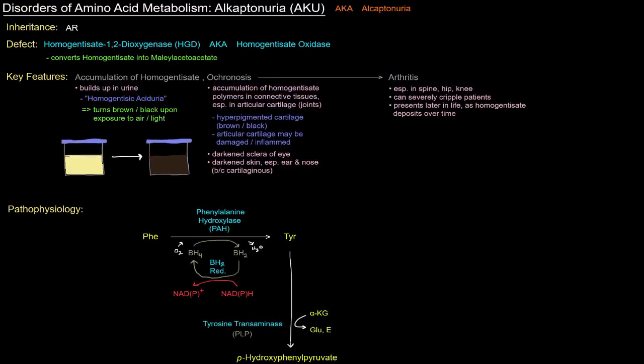So let's scroll back up here. The key thing, the most obvious and easy thing to note, is the accumulation of that homogentisate, and that builds up in the urine and leads to homogentisic aciduria. One really important thing about it is that it turns brown or even black upon exposure to air and light. So that's pretty important, noting the presence of it in the urine, especially upon realizing that the urine turns that dark color, like black, basically, upon exposure to air and light.